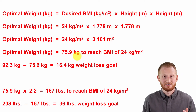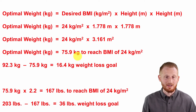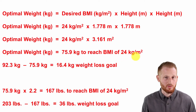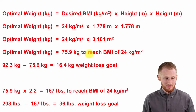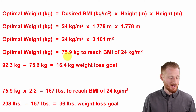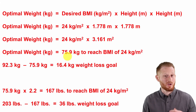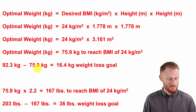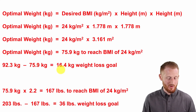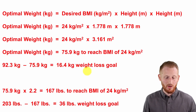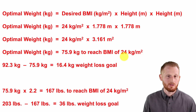That is the optimal body weight in kilograms if the goal BMI is 24 kilograms per meter squared for this individual. So the optimal body weight to reach is 75.9 kilograms. His current weight is 92.3 kg; subtracting 75.9 gives us 16.4 kilograms of weight loss needed to reach his goal BMI of 24 kg/m².